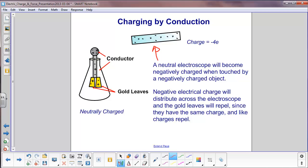So it will start at the conductor at the top, at the sphere, spread out down until it reaches the gold leaves, and then each gold leaf will have a net negative charge. Since they both have the same charge, we will expect them to repel each other.